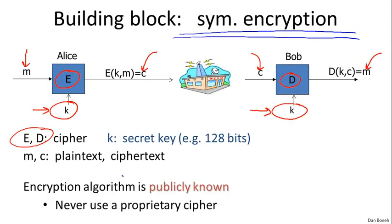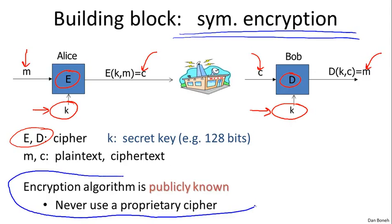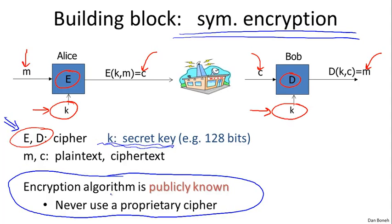A very important point: the algorithms E and D — the actual encryption algorithms — are publicly known. The adversary knows exactly how they work. The only thing that's kept secret is the secret key K. Everything else is completely public. It's really important to realize that you should only use algorithms that are public, because those algorithms have been peer-reviewed by a very large community of hundreds of people for many, many years. These algorithms only begin to be used once this community has shown that they essentially cannot be broken.